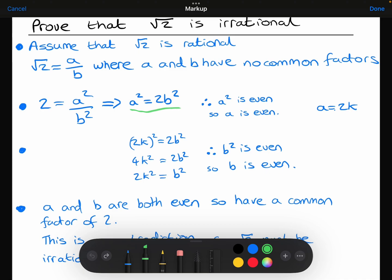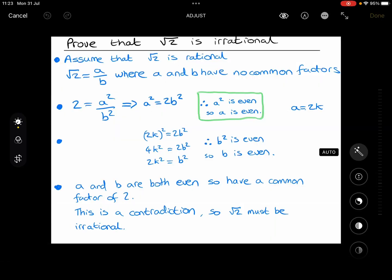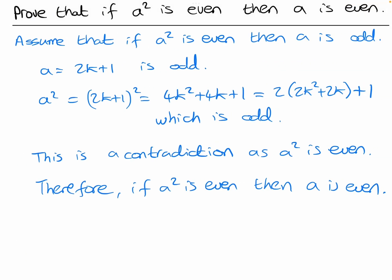The fact that a squared equals 2b squared means that a squared is even. Having 2 times b squared tells me that a squared has to be even, which means that a also has to be even. We actually proved this statement in the previous video — if a squared is even, then a also has to be even. Go back and re-watch that video if you want a more thorough proof of that statement.